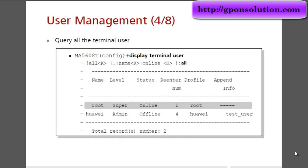Use the display terminal user command to query all terminal users. Here we see 2 users: root and the new user. The display shows username, user level, status (online or offline), login number, profile, and appended info. Total record is shown.